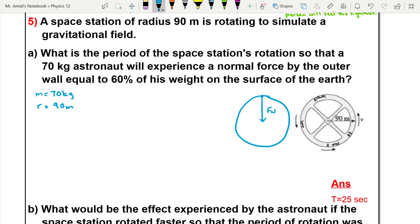And the other thing that we know is that the astronaut's weight on Earth is going to be equal to their mass, 70 kilograms, times gravity, which is 9.8 meters per second squared, and that's going to be...